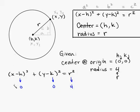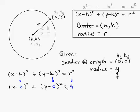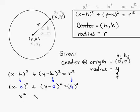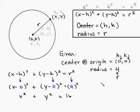Now bring everything down and simplify. x minus 0, quantity squared, plus y minus 0, quantity squared, equals 4 squared. So that simplifies to x squared plus y squared equals 16. That's the equation of the circle with center (0, 0) and radius 4.